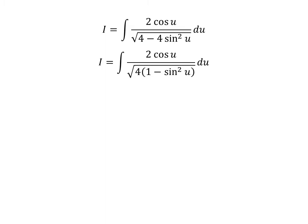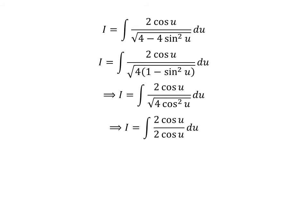Taking out the common factor 4 in the denominator gives us I is equal to the integral of 2 times cosine of u upon square root of 4 times 1 minus square of sine of u. Using the trigonometric identity 1 minus square of sine of u equals square of cosine of u, I becomes the integral of 2 times cosine of u upon square root of 4 times square of cosine of u, which simplifies to 2 times cosine of u.